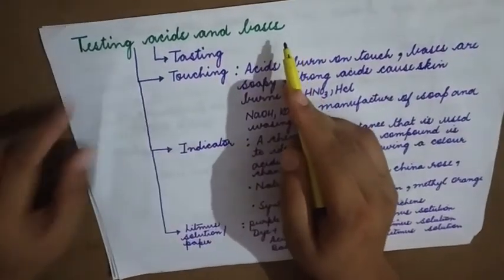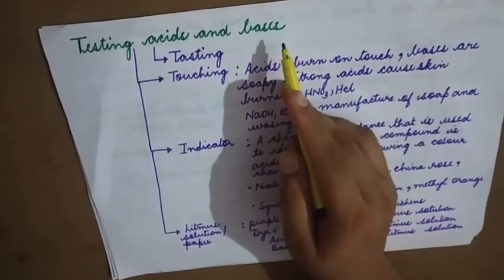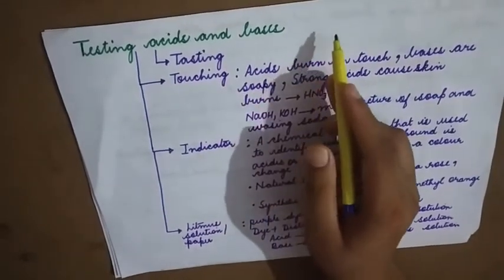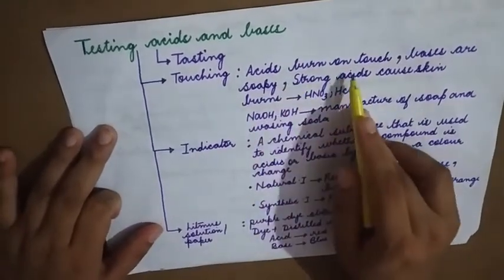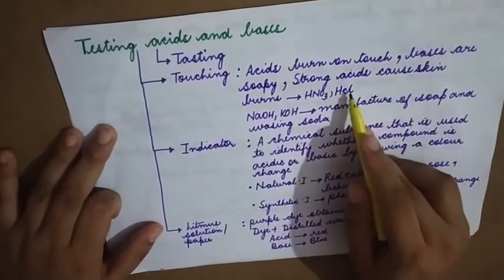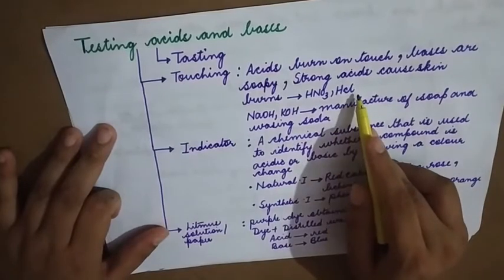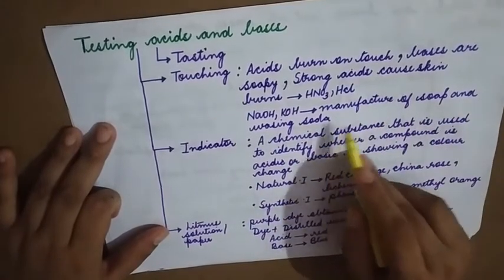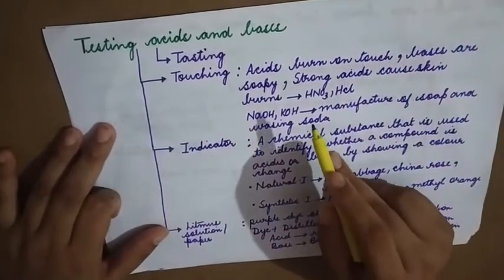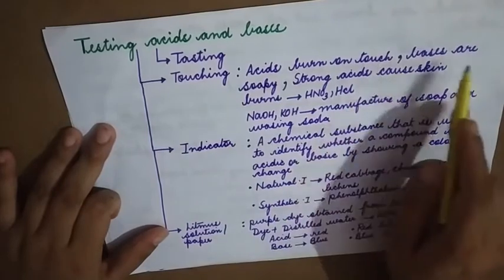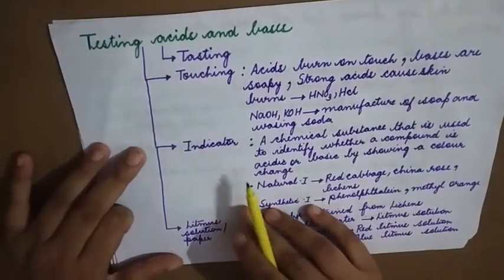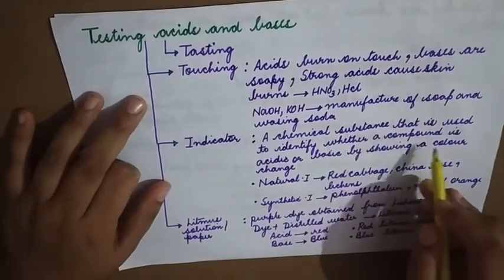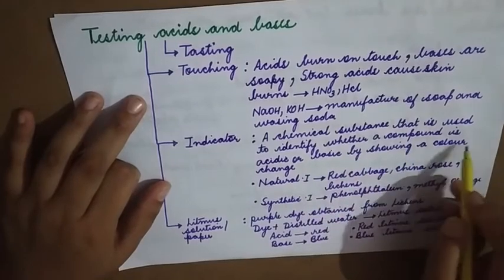Testing acids and bases: how do we know if a substance is an acid or a base? Either by tasting — acids are sour whereas bases are bitter — or by touching. Strong acids like nitric acid and sulfuric acid cause skin burns. Bases such as sodium hydroxide and potassium hydroxide are soapy to touch. An indicator is a chemical substance used to identify whether a compound is acidic or basic by showing a color change. Natural indicators include red cabbage, china rose, and lichens; synthetic indicators include phenolphthalein and methyl orange.